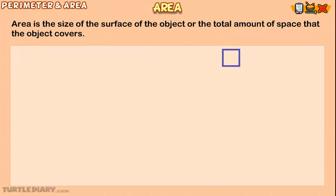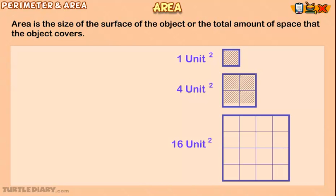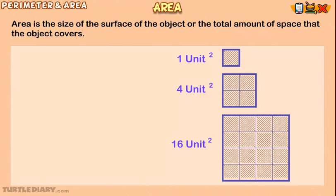For a rectangle or a square, the area can be found by multiplying the length or height by its width. Area equals length times width.